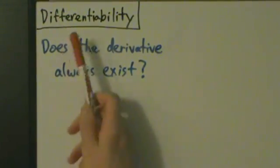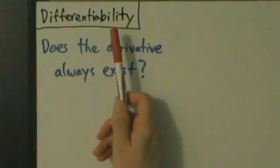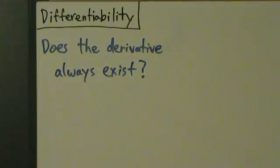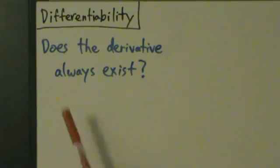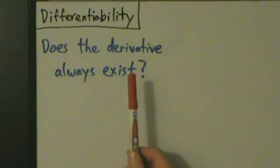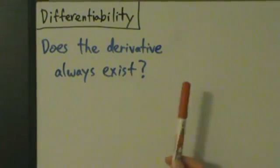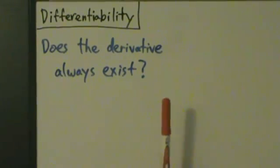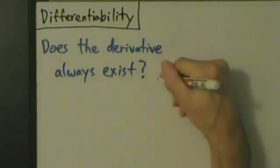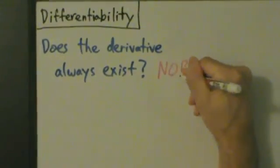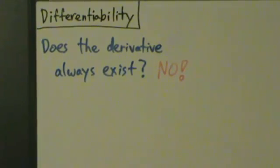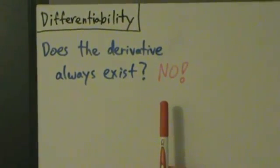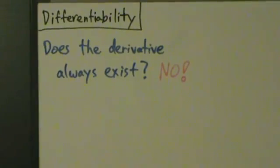Now we're going to talk about differentiability. When we say a function is differentiable, that means we're able to take the derivative. So the question is, does the derivative always exist? Or in other words, is every function always differentiable? And the answer is no — the derivative does not always exist. There are three main ways of seeing when the derivative won't exist.